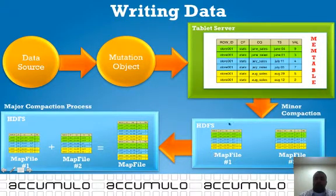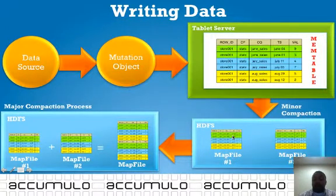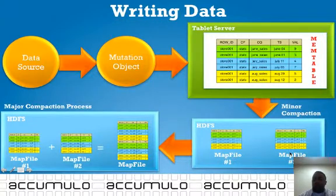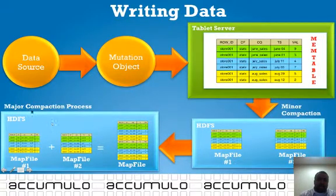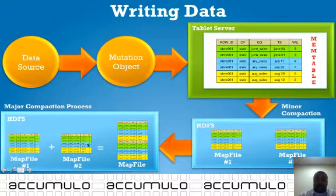The minor compaction simply takes the data stored in the mem table and puts it into a map file. On the next minor compaction, the same thing occurs — it creates another map file based on the data in the mem table. The major compaction then takes all existing map files and combines them into one big map file.